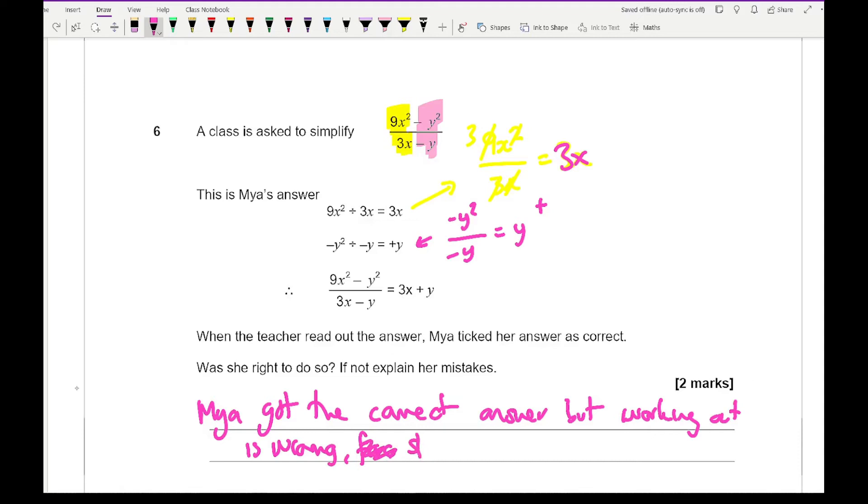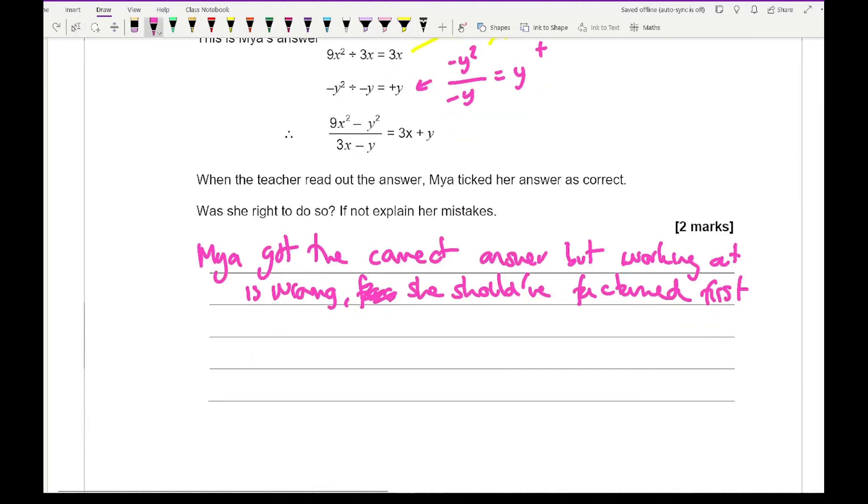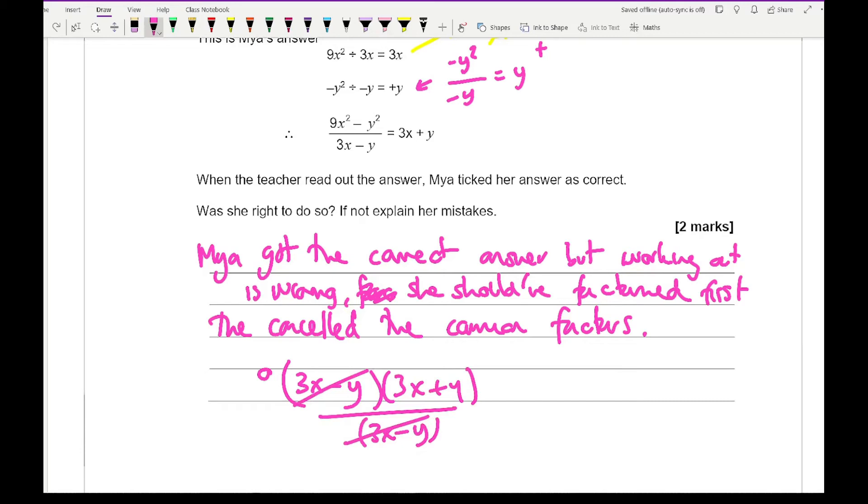What she should have done is factorised first. She should have done 3X minus Y, 3X plus Y all over 3X minus Y and that cancels. You can get the same answer, but that's what she should have done.